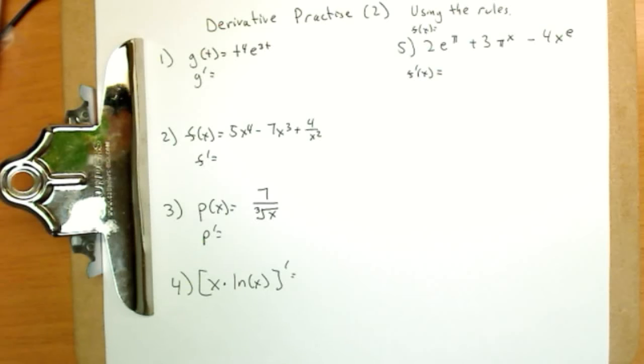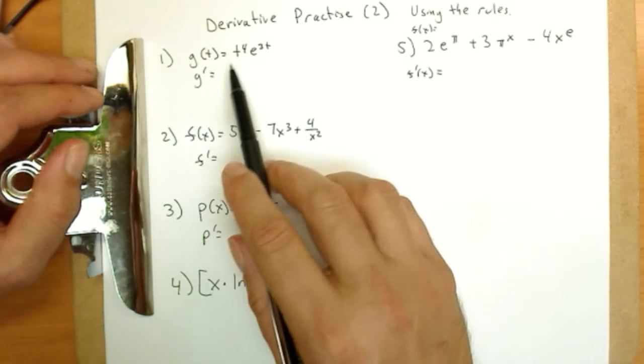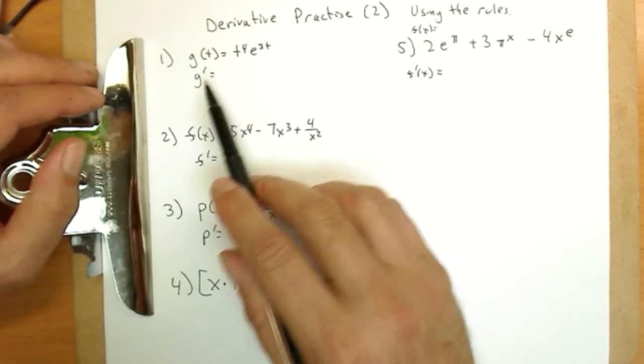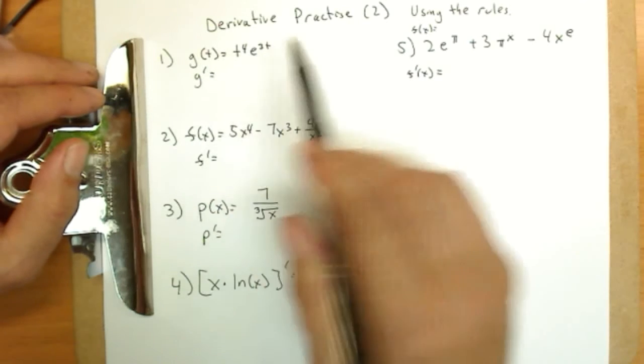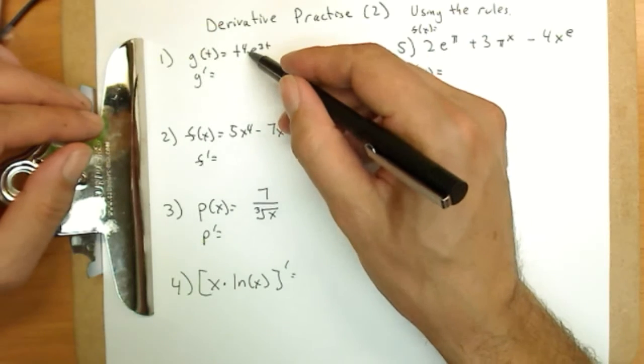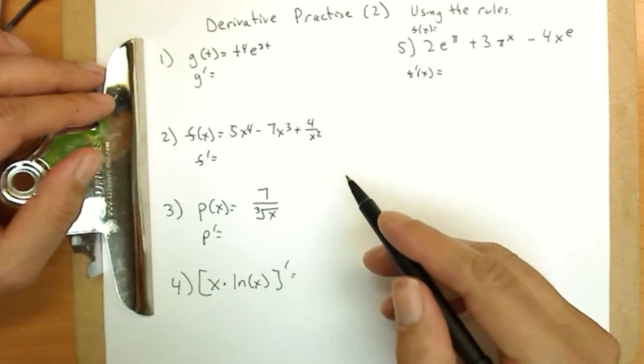You'll have a chance to correct them in just a moment when I do them. Okay, so you're back. You've done all the problems, and now we're ready to work them out together to make sure. g of t is t to the fourth e to the third t. We want to find g prime. This is a product, even though they're just written together, we know they're multiplied. So we must use the product rule.